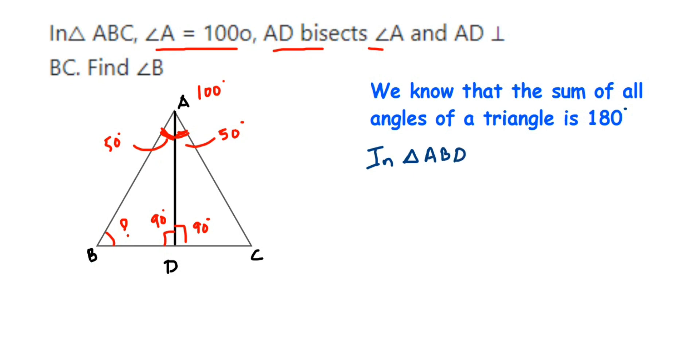D equals 180 degrees. Now angle A will be 50 degrees—only this angle we're finding, not the whole angle, just this portion. It will be 50 plus angle B, which we have to find, plus